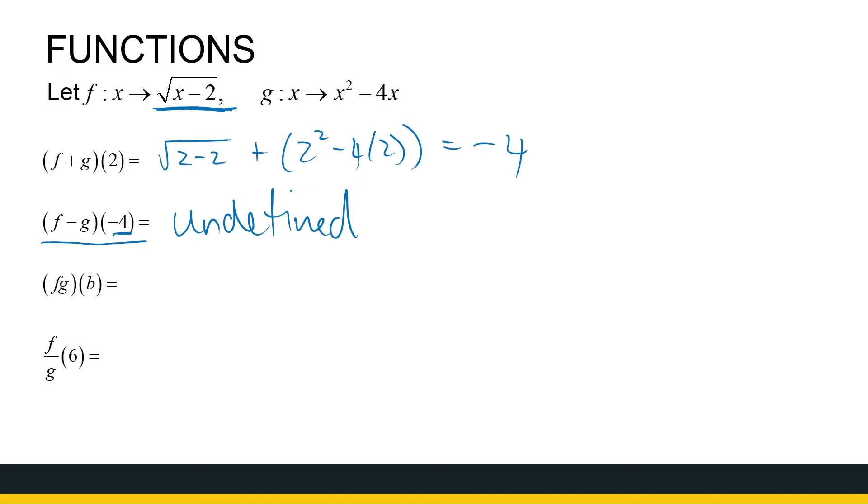f times g in the point b. Now b is not a number, it's an unknown, but it's still treated the same way. It's the root of b minus 2 times, because it's the product function, b squared minus 4b. As simple as that. The quotient in the point 6, is 6 in the domain of the quotient? Yes, it is. We saw that on the previous slide. So we've got the root of 6 minus 2 divided by 6 squared minus 4 times 6. That gives me the root of 4, which is 2, over 36 minus 24. 36 minus 24 is 12. So it's 2 over 12, which is 1 over 6. So those are the kind of questions we can ask.